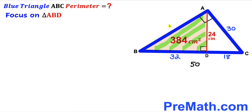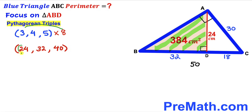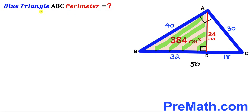Now focusing on right triangle ABD, whose known side lengths are 32 and 24, we calculate side AB. Recalling the Pythagorean triplet 3-4-5 and multiplying by 8: 8×3=24, 8×4=32, and 8×5=40. Since we have 32 and 24, we conclude that AB = 40 centimeters.